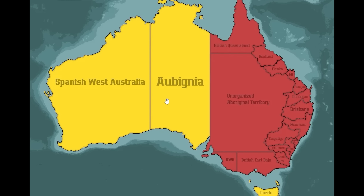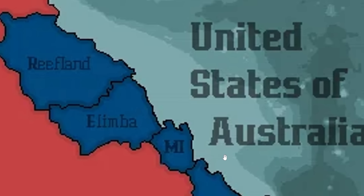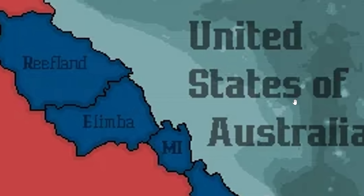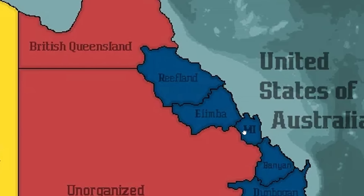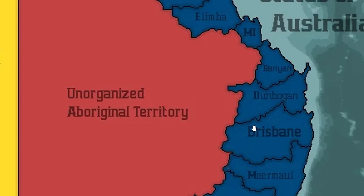They did the Louisiana Purchase, or in this universe, it might be the Unorganized Aboriginal Territory Purchase. There still needs to be a Mexican-American War, or in this universe... I don't even know how I can make a metaphor for that. Now we have a United States of Australia. They are independent from the British, as you can see.